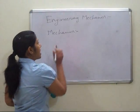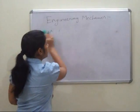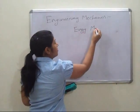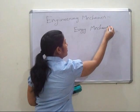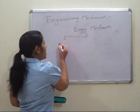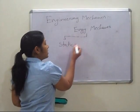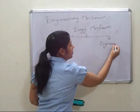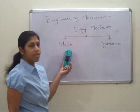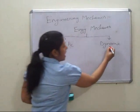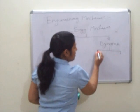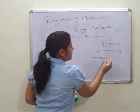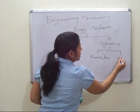In Mechanics, we can divide Engineering Mechanics into two types: one is Static and another is Dynamic. The Dynamic part can be further subdivided into Kinematics and Kinetics.